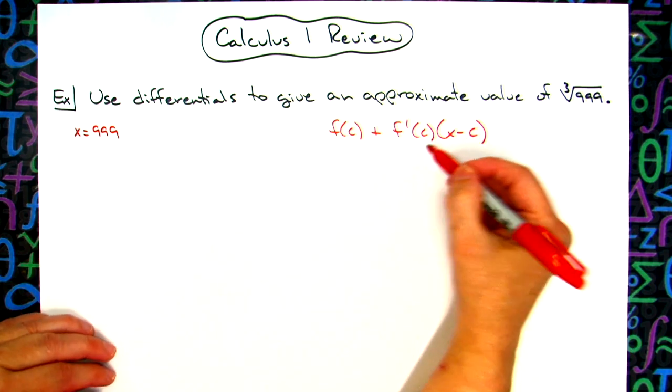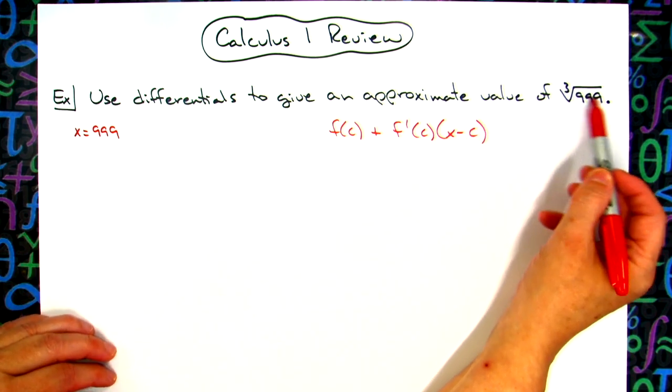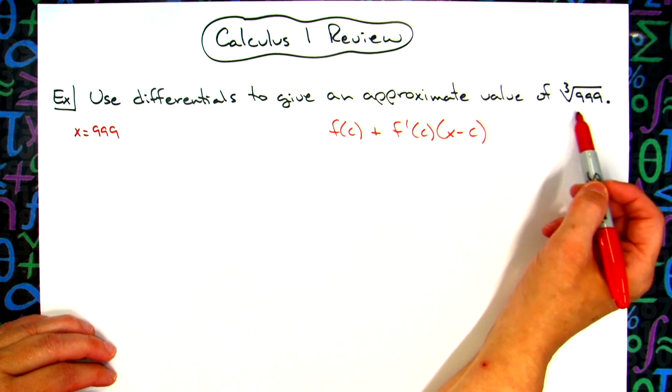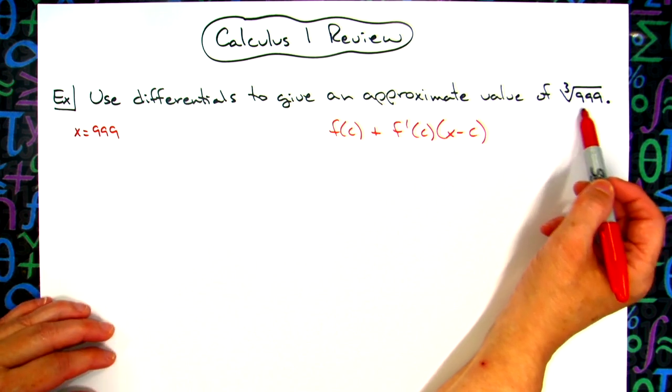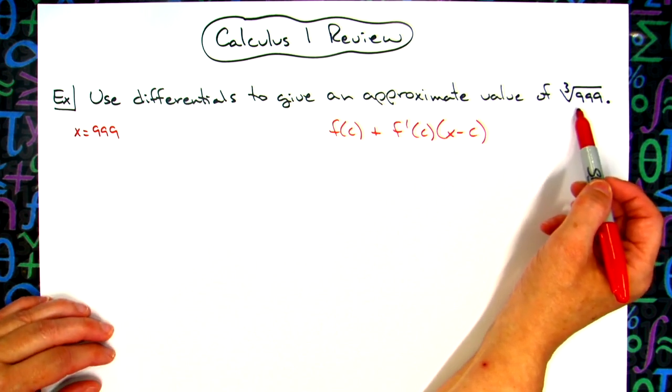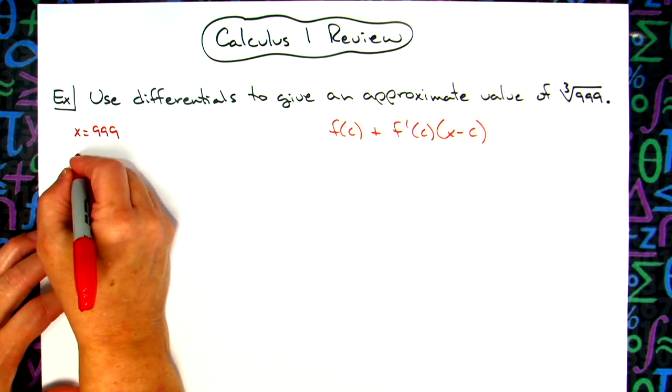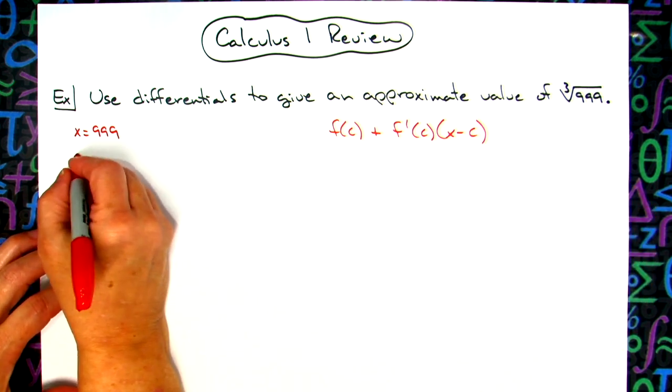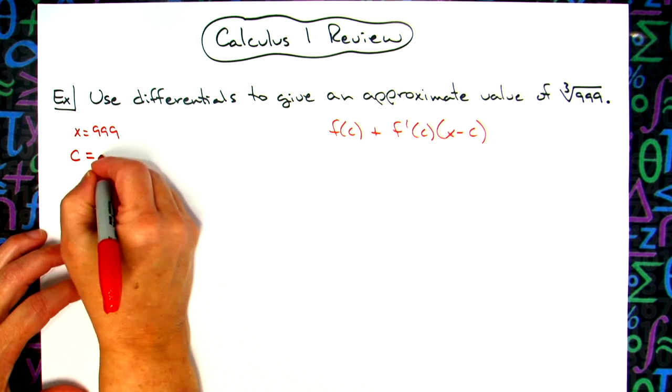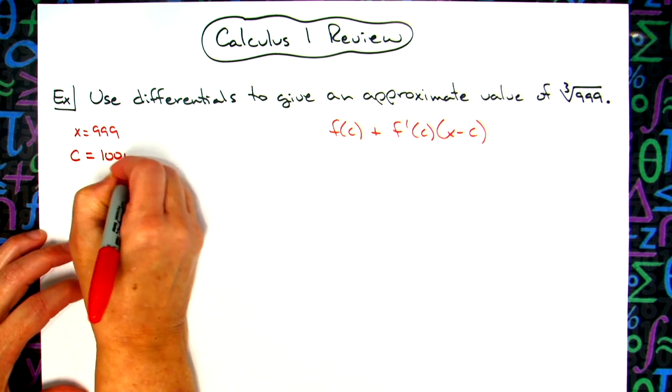Now I want to pick a value of c, which is a cube root, a perfect cube root, one that I can do, and is really close to 999, the closer the better. So the cube root of 1,000 is a cube root that we can do, perfect cube root. So we're going to let c be 1,000.